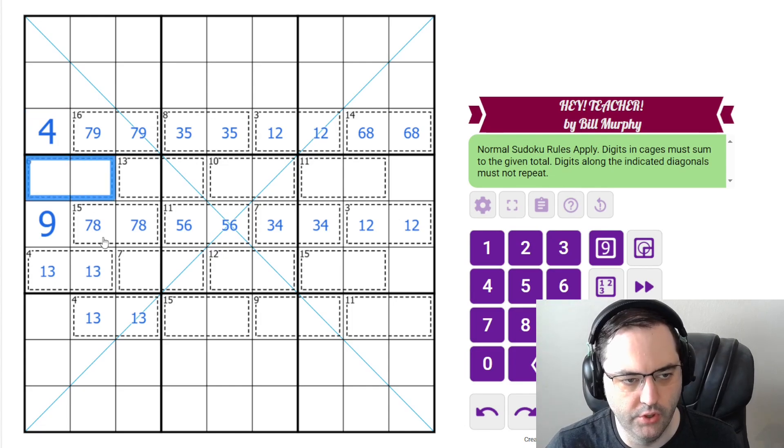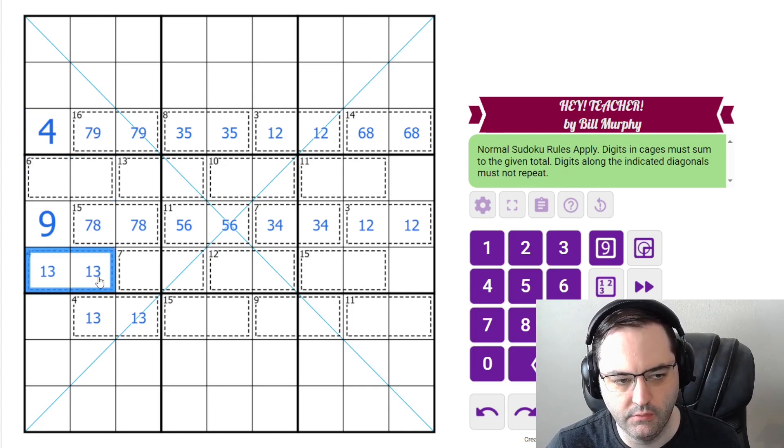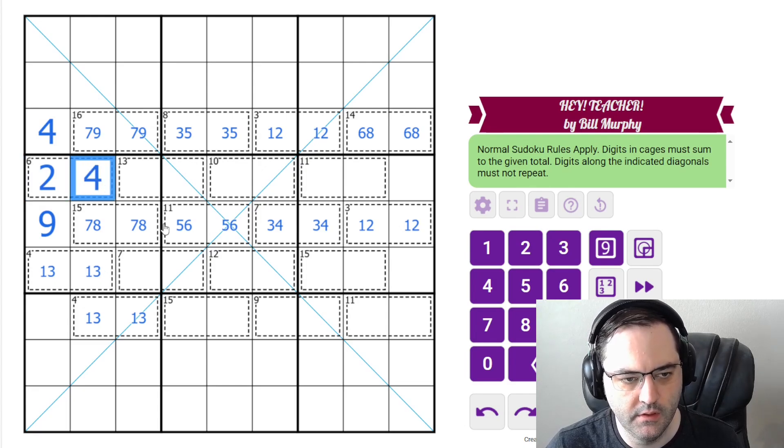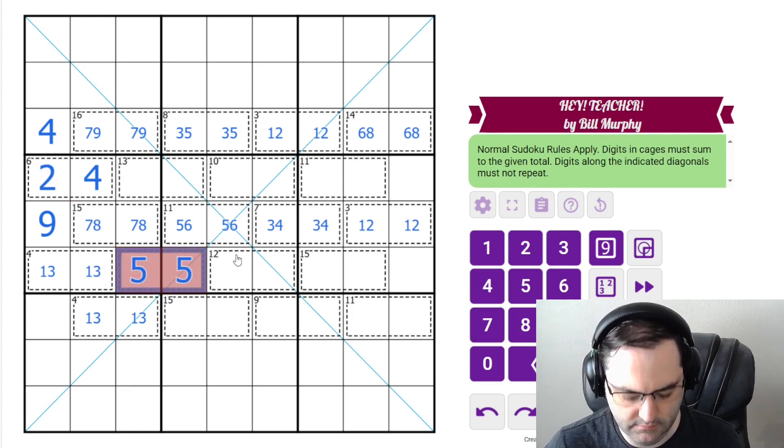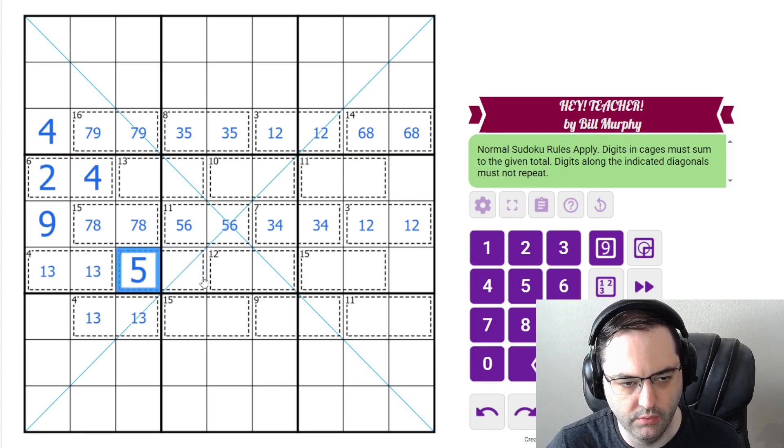In this box, we have a 1 already, so this must be 2, 4, 7, 6. If we already have 1, 3, the 7 can't be 1, 6, 4, 3, 4. So it must be 2, 5, and we know the order there.